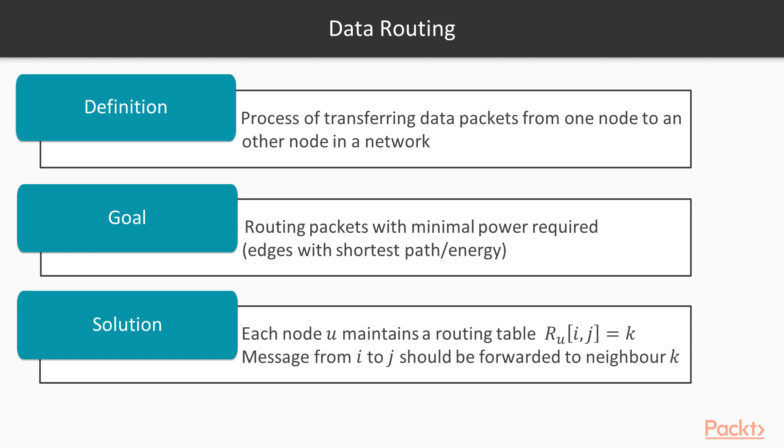Data routing is defined as a process of transferring data packets from one node to another node in a network, where the goal is to use routing techniques that allow nodes to use minimum power during data transfer. To achieve this, every node maintains a routing table, which tells that the message m coming from node i and destined for node j should be forwarded to neighbor node k.